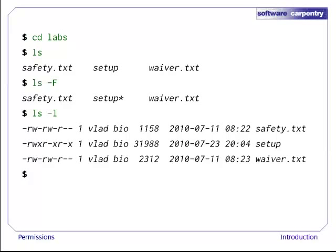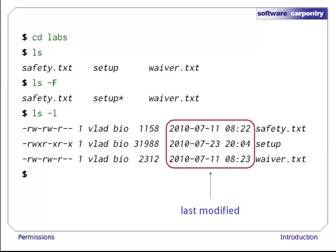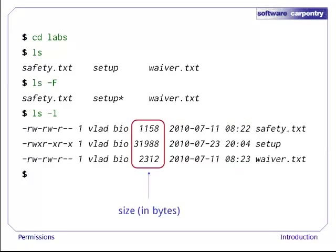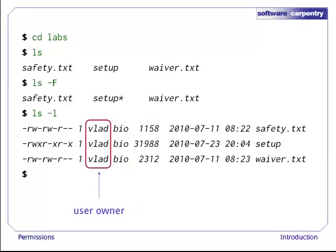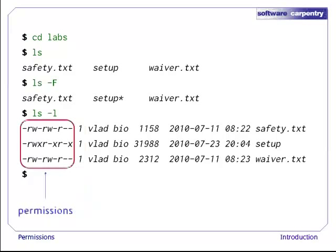Now let's run the command ls -l. The -l flag tells ls to give us a long-form listing. It's a lot of information, so let's go through the columns in turn. On the right side, we have the files and directories' names. Next to them, moving left, are the times they were last modified. Next to the modification time is the file's size in bytes. Next to that is the ID of the group that owns it and of the user that owns it. The column on the left shows the file's permissions — i.e. who can read, write, or execute it.